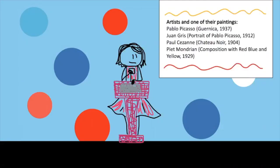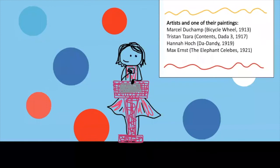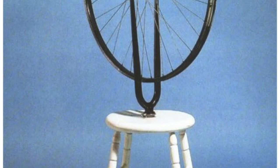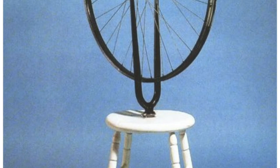The next era is Dada, from 1916 to 1923. This is when art could pretty much be anything — you could probably take a flat tire from your car and consider it art. It was a very interesting time for all pieces of art. Bicycle Wheel was a piece of art from this era.